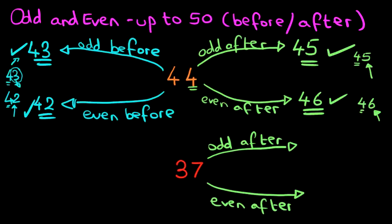Counting forwards from 37, what number comes after 37? After 37 is 38. Ignore the 3, concentrate on the 8. Is 8 an odd number or an even number? Let's count the evens starting from 0: 0, 2, 4, 6, 8. It's an even number — 8 is an even number. Therefore 38 is an even number.